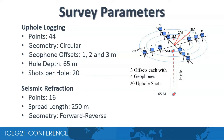An integrated survey comprising of 44 uphole logging points and 16 seismic refraction points with forward-reverse shooting geometry is carried out. The uphole logging has a circular geometry with geophone offsets at 1, 2, and 3 meters and a hole depth of 65 meters with 20 shots at different depth intervals. The seismic refraction has a spread length of 250 meters with 24 geophones.